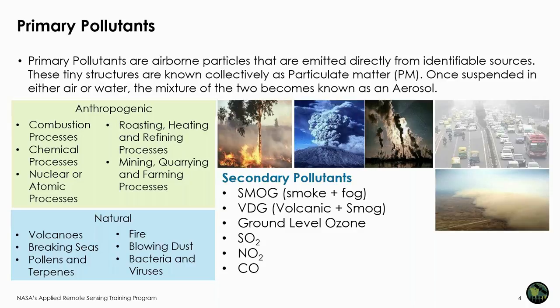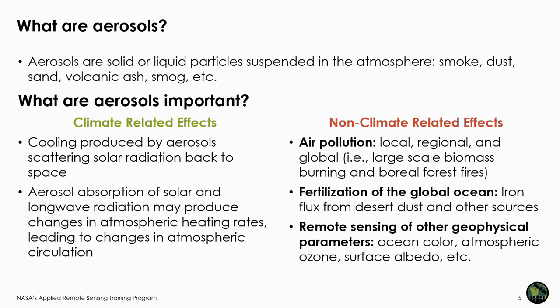Secondary pollutants include smog (smoke plus fog), volcanic ash combined with smoke, ground-level ozone, and gaseous pollutants such as sulfur dioxide, nitrogen dioxide, and carbon monoxide. In excess amounts these constitute polluted air, and satellite datasets can be used to study these effects.